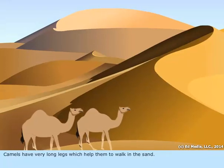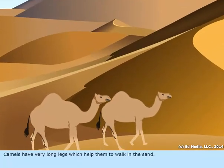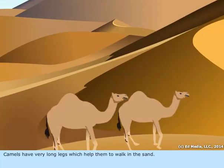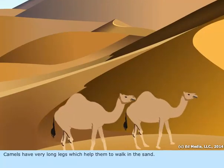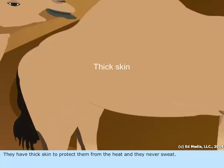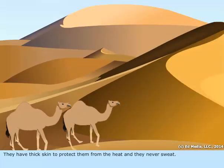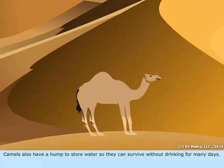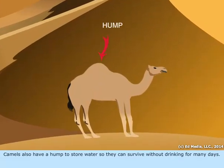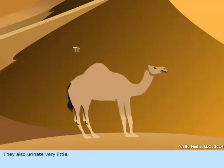Camels have very long legs which help them to walk in the sand. They have thick skin to protect them from the heat and they never sweat. Camels also have a hump to store water so they can survive without drinking for many days, and they also urinate very little.